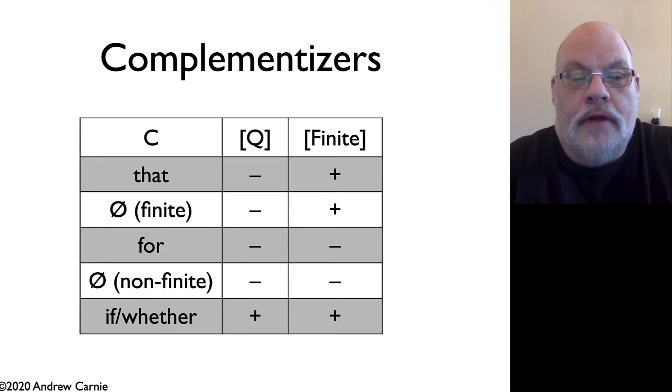We also have the non-finite forms. So they have a negative value for finite. They're also not questions. Again, there is both an overt form, which is the 'for' form, and the null form. These pattern identically within the sentences we've already seen. And finally, we have the complementizers if or whether, and these are questions, and they're also finite. There is, of course, one missing here. There's no form that's plus Q minus finite. That just seems to be a gap in the paradigm.